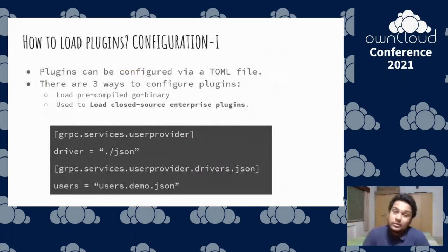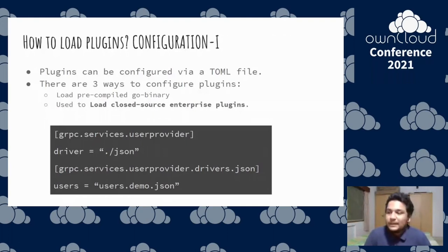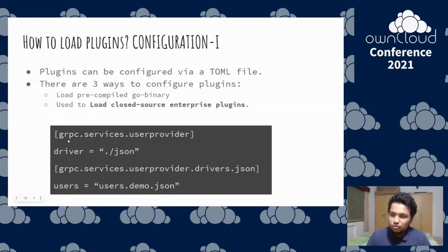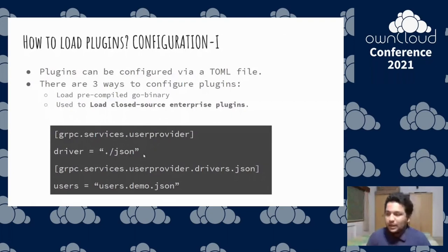Now let's talk about how we load the plugins. There are three methods. Plugins are configured via a normal config file. The first way is a pre-compiled Go binary — this is how you can load closed-source or enterprise plugins. If you don't want to share the source code, this configuration shows how to start a user provider service with a JSON driver: you just point to the binary on your local filesystem, and the daemon starts with that particular plugin.